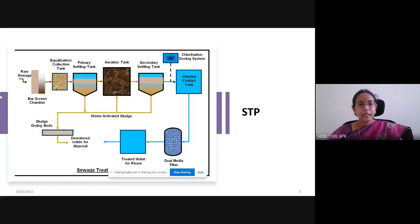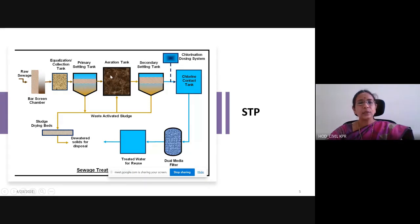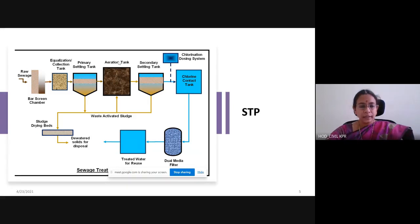Then comes the primary settling tank, where settling is taking place. Small particles settle at the bottom here. After the primary settling tank, it is then taken to the aeration tank. Aeration may be given as an open aerator or submerged aerator — anything can be given. Through air bubbles that are produced artificially, the sewage gets decomposed.